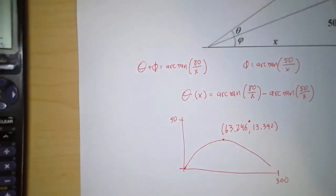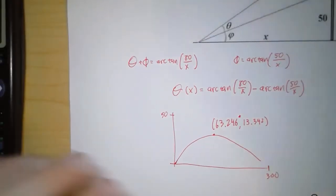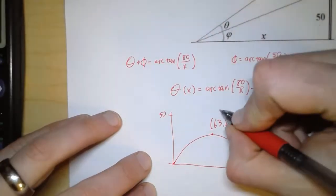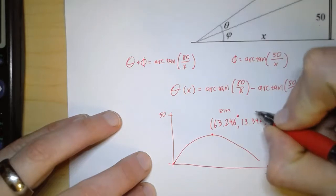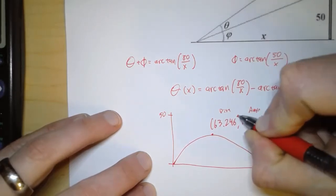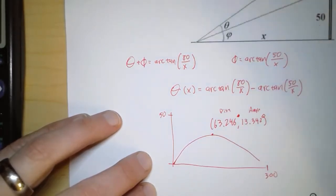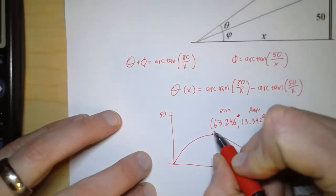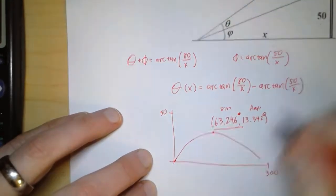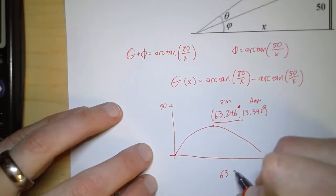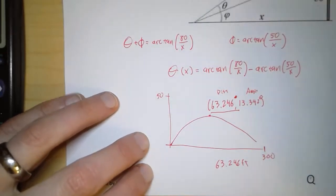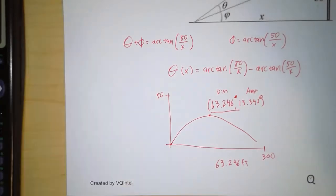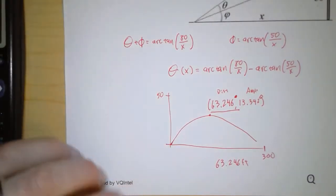Now the thing to keep in mind is, what does x and y stand for? In this case, x stands for the distance, and 13.342 is the angle. So actually, that should be in degrees. And so this is how far we should be from the screen. 63.246 feet will optimize our viewing angle. Anything closer will reduce it. Anything further will reduce it.